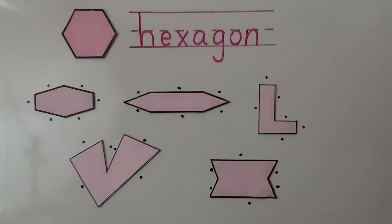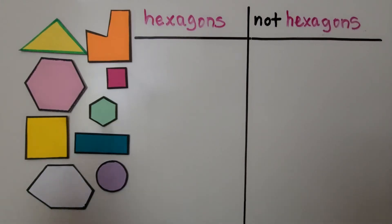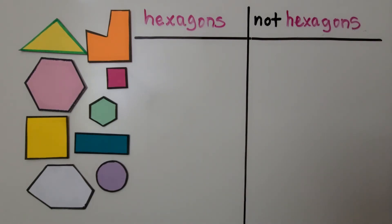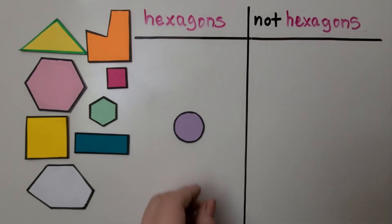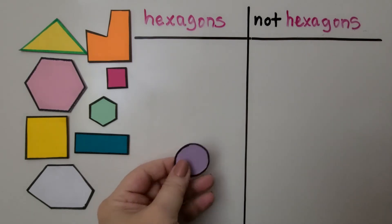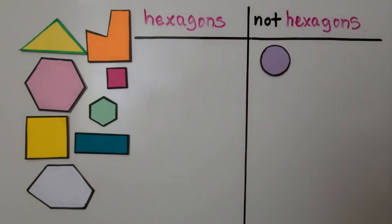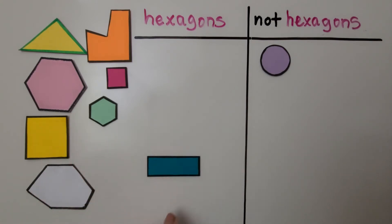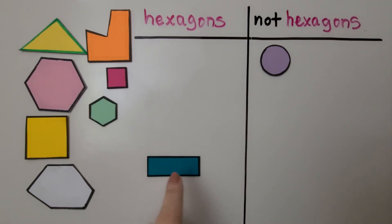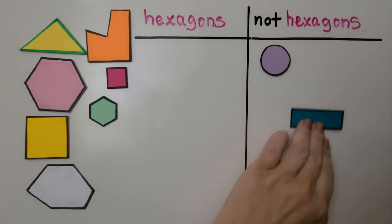Here we have several shapes and we can sort them into sets of hexagons and not hexagons. We count the number of sides — if a shape has six sides, it's a hexagon. This one has no sides; it's round with a curve going all the way around — that's a circle, not a hexagon. This one has one, two, three, four sides — that's a rectangle, not a hexagon.